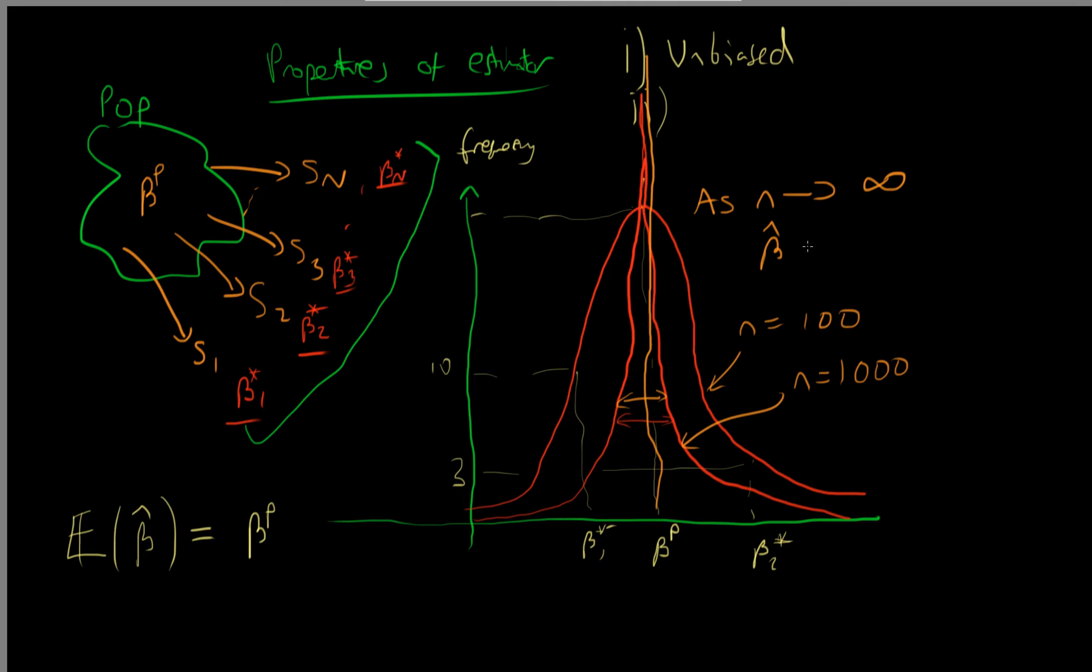So this property is best stated mathematically: as our sample size tends to infinity, our estimator tends in value to the true population parameter. This is a property which we call consistency of estimators.